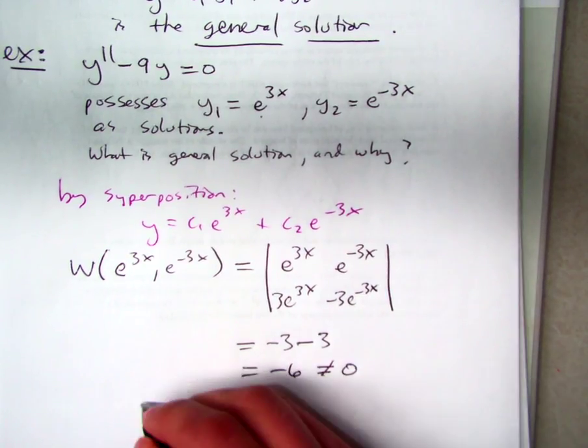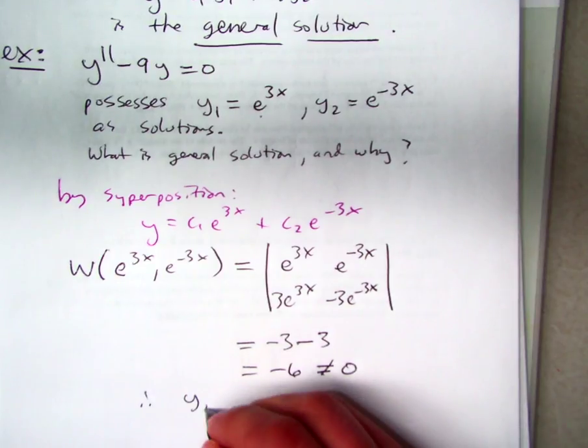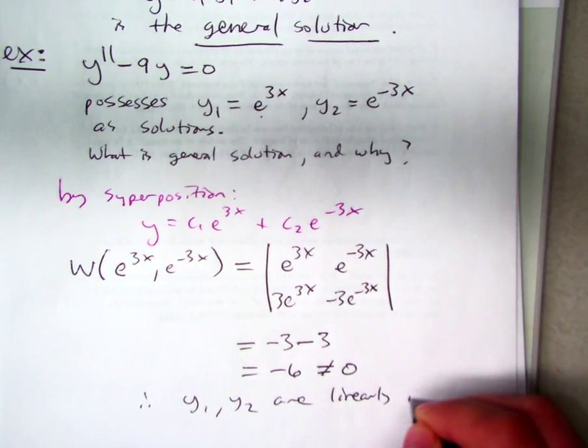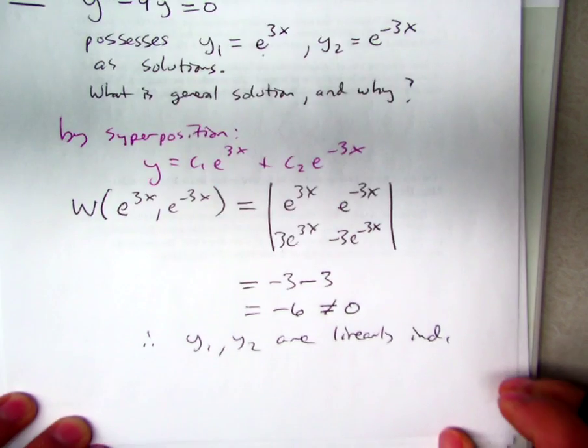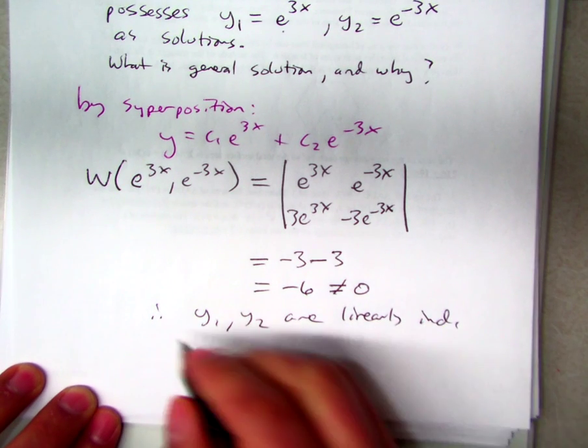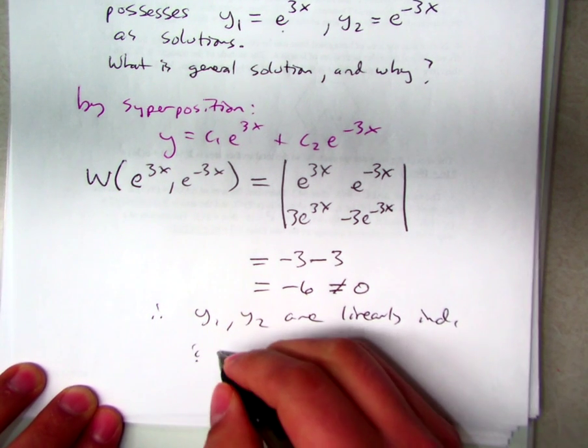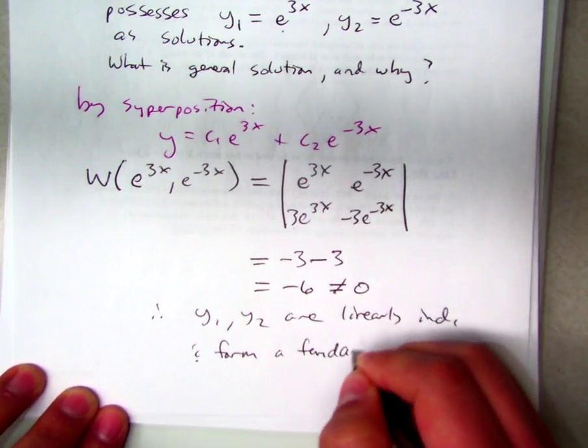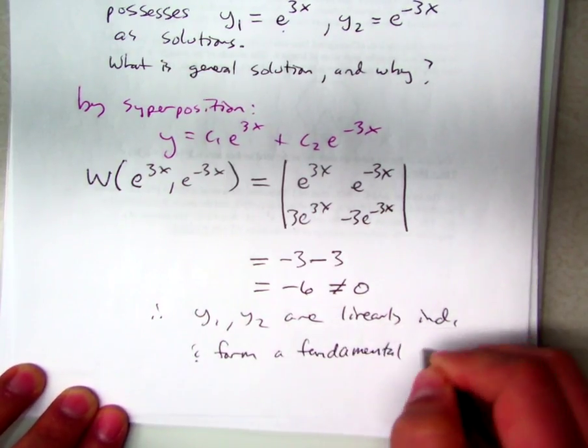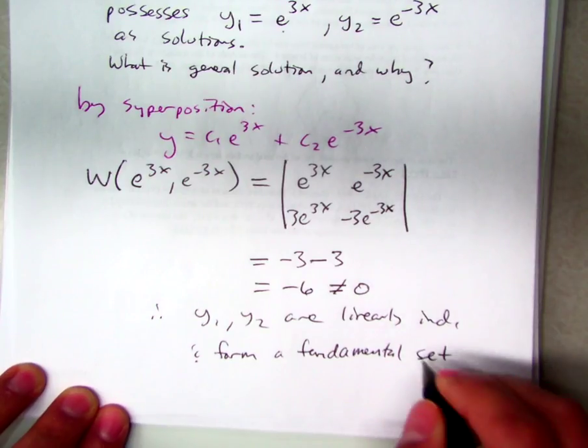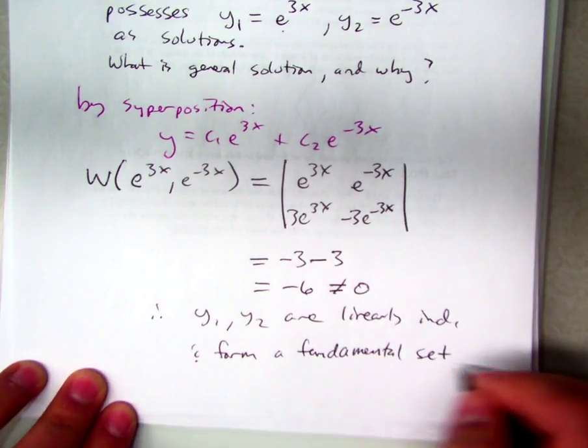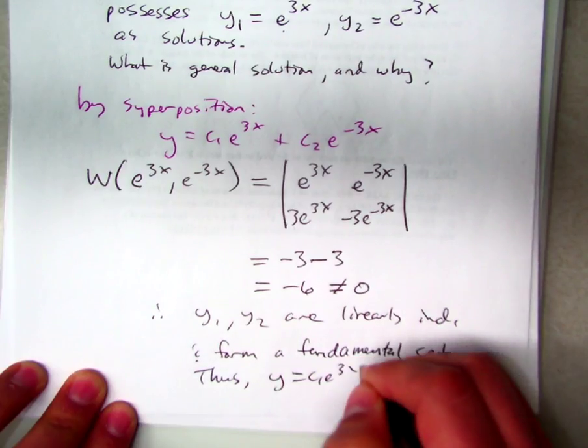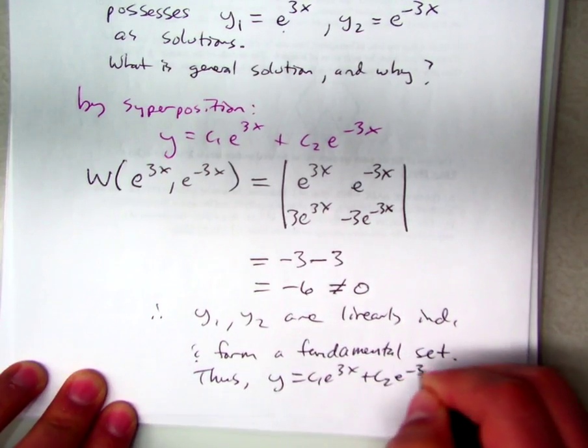Therefore, y1, y2 are linearly independent and form a fundamental set. Which means that y equals c1 e to the 3x plus c2 e to the minus 3x is the general solution.